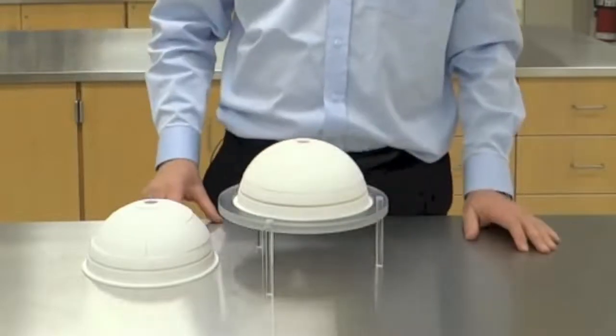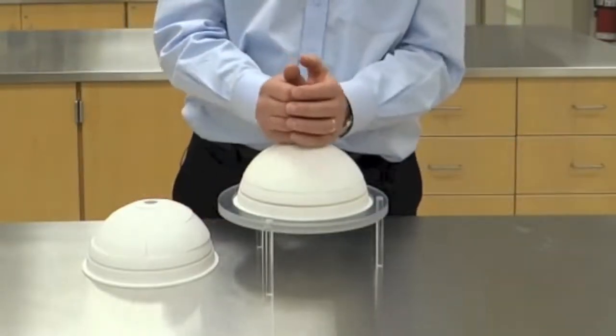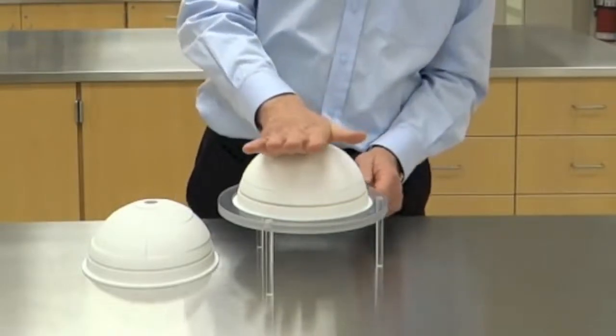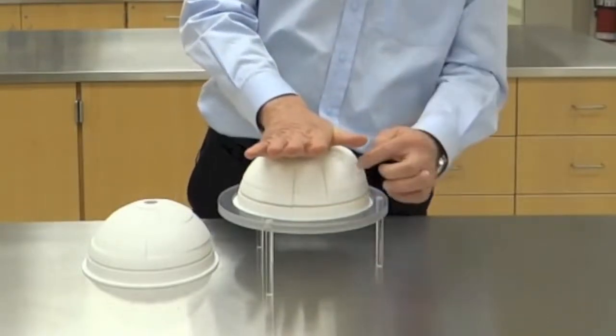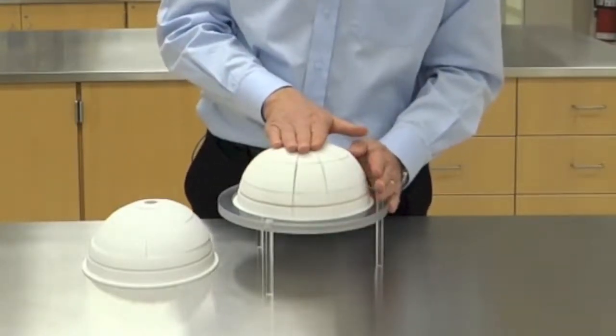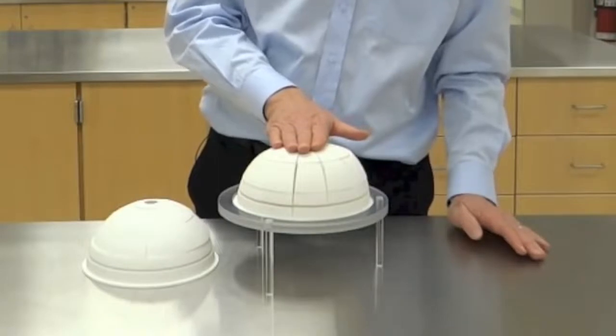Suppose that this was a masonry dome and you put a large cupola or some other kind of a load at the center, what could happen is this. Notice how the spaces open up between the blocks. If this was made a masonry, you can imagine that this would fall down as a result of that loading.